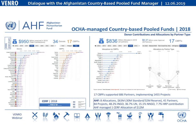In 2018, country-based pool funds received overall donor contributions of about $950 million — a significant gradual increase over the years — demonstrating the growing importance of CBPFs as a funding mechanism for INGOs. Of that, $836 million was dispersed to partners. The remaining amount represents carryovers — money still being used. None of the money OCHA receives has ever been redirected from its intended purpose; it stays in country and unspent funds roll over to the next year.